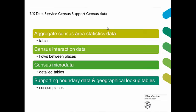In terms of the types of census data, it breaks down to four key data types. There's aggregate census data — the tables, which is the core census data from 1971 through to 2011, with lots of variables and combinations. There's census interaction data, which is flows between places such as commuter flows — where people live and where they work, as well as migration. There's census microdata, which is detailed or longitudinal information about people. And we also have supporting datasets, including boundary datasets and geographic lookup tables, which allow people to map census data and create spatial analysis.